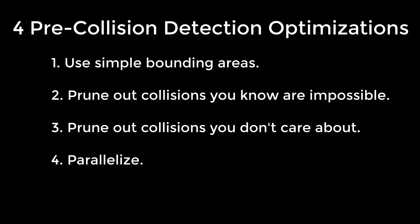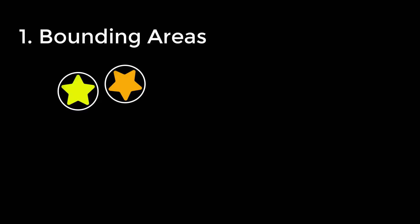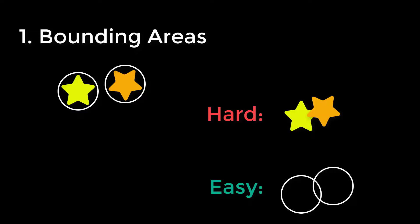If you have anything to contribute to this discussion, post it in the comments and I can update the video description. The first type of optimization is using bounding areas, and I already talked about this in the last video, so if you haven't seen that, go watch it. But the motivation here is that doing complex polygon collisions is hard, but doing bounding area collisions is easy — and when I'm saying easy and hard, I'm talking about the computational difficulty of detecting those collisions.